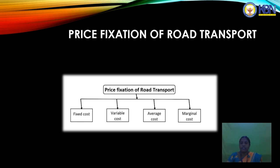The maintenance cost that varies in roadways is called variable cost. For example, Vijayawada to Hyderabad — the travel carrying goods and people from one place to another by roadways. The situation from Vijayawada to Hyderabad or Vijayawada to Bangalore varies. These situation-to-situation and condition-to-condition variations are called variable cost in the price fixation of road transport.